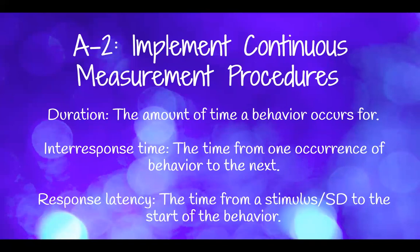Duration is the amount of time a behavior occurs for. For example, your learner hit for 15 seconds or for 12 minutes. Inter-response time is the time from one occurrence of a behavior to the next. So if your learner hit you at 11 o'clock and then again at 11:30, the inter-response time would be 30 minutes. Response latency is the time from a stimulus, SD, or instruction to the start of the behavior. So if I told my son at 8:00 to go brush his teeth and he doesn't start brushing until 8:10, the response latency would be 10 minutes.